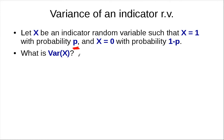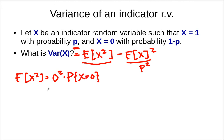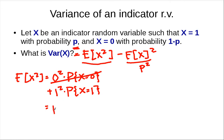The variance of x is, again, the expected value of x squared minus the square of the expectation. We know the expectation of x is p, so the square of the expectation is p squared. The expected value of x squared takes value 0 squared with probability x equals 0, and 1 squared with probability x equals 1. The zero term cancels, so the expected value of x squared is just p. Plugging in, we get p minus p squared.